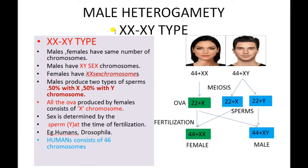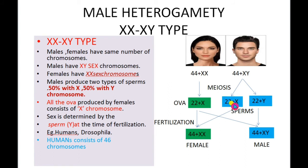Another type of male heterogamity is the XX/XY type of sex determination, which occurs in human beings and Drosophila. In this type, males and females have the same number of chromosomes, unlike the XX/XO type. Males have two sex chromosomes — one X and one Y. Females have two X chromosomes. Males produce 50% of sperms with the X chromosome and 50% with the Y chromosome; females produce 100% of ova with only the X chromosome.